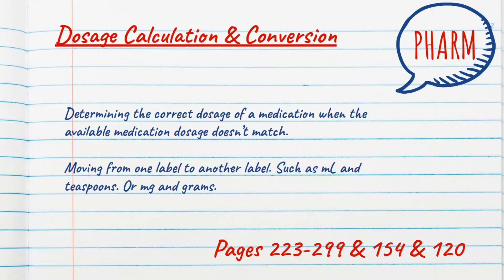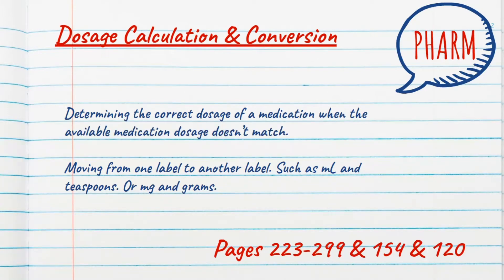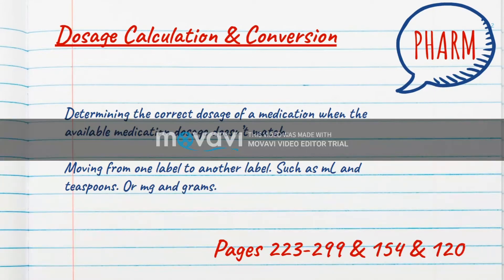Dosage calculation is when you determine the correct dosage of a medication when the available medication doesn't match. So if I need to give somebody 650 milligrams of Tylenol, but I only have a 325 milligram tablet, I know that I need to give them two of those tablets. That's what dosage calculation is. And then conversion is moving from one label to another label, such as moving from milliliters to teaspoons or milligrams to grams or vice versa.